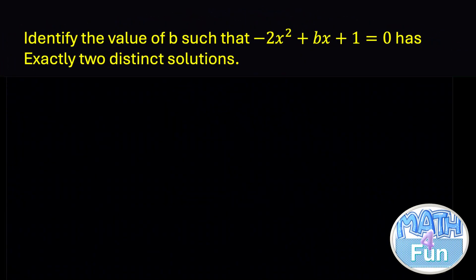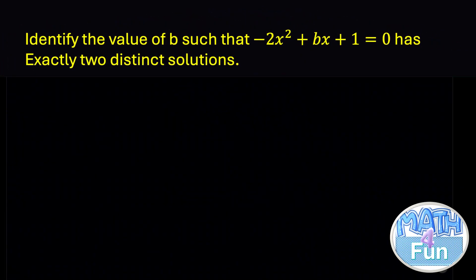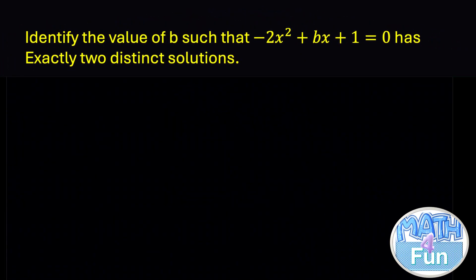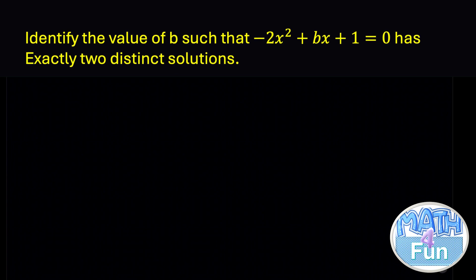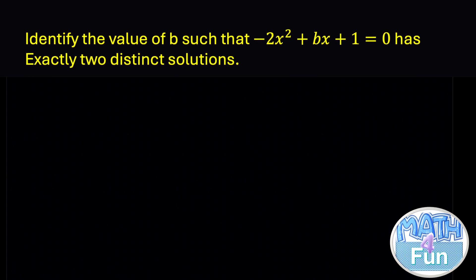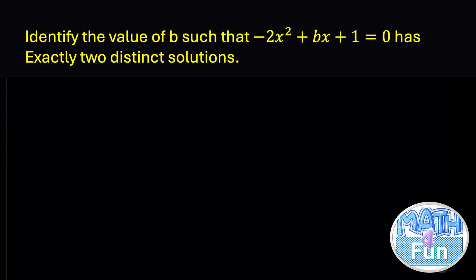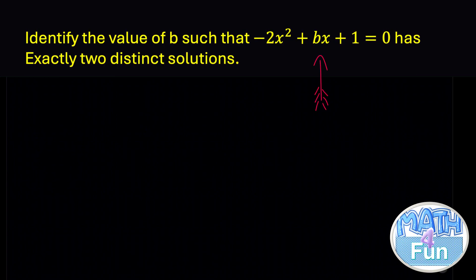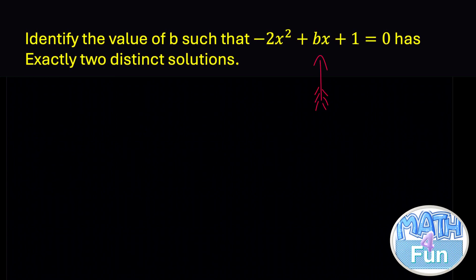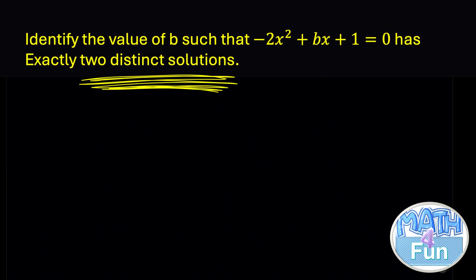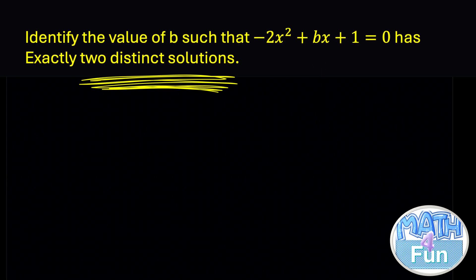Look at this question: identify the value of b such that -2x² + bx + 1 = 0 has exactly two distinct real solutions. They are asking for b given that the equation has exactly two distinct real solutions. We can tackle this through the discriminant.